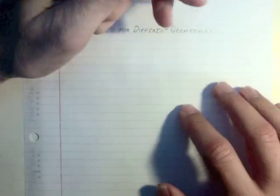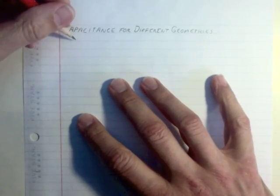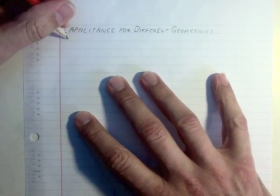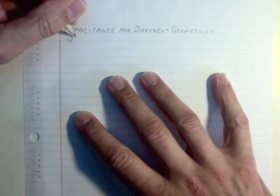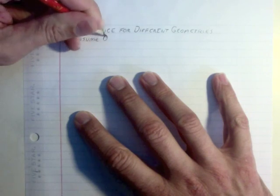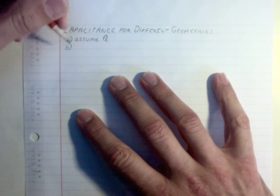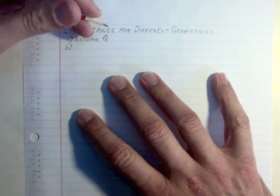Okay, we're going to do some capacitance for different geometries. And there are really just a few steps you need to follow. I'm not saying they're easy, but there are steps you have to follow to find these. First of all is assume Q. In other words, say there's Q on this object, whatever it happens to be.